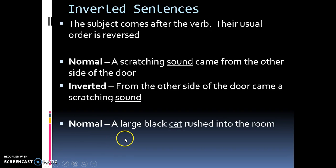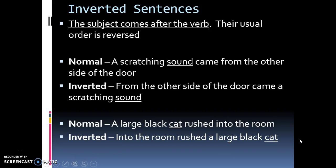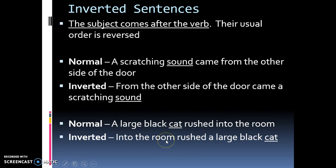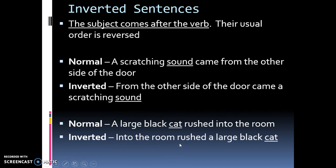Example two: "A large black cat rushed into the room" becomes "Into the room rushed a large black cat." The verb is "rushed" and "cat" is your subject — it comes after the verb in an inverted sentence. Another way to think about it: you know "rushed" is your verb, and a room can't rush, so a room cannot be your subject. Just like a door cannot make a scratching sound, so the door is not your subject. Write down this inverted sentence in your notes as well, then close your inverted sentence notes.